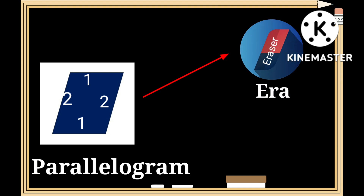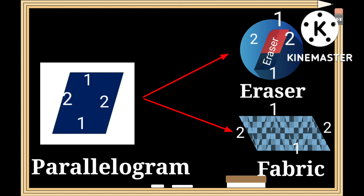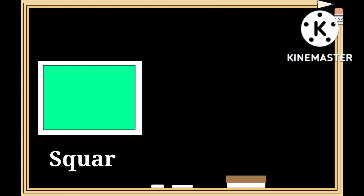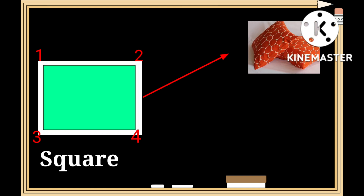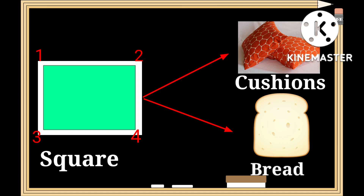This is a shape of a parallelogram — p-a-r-a-l-l-e-l-o-g-r-a-m. A parallelogram has two pairs of equal and opposite sides. As you can see, an eraser and fabric have got a shape similar to that of a parallelogram.